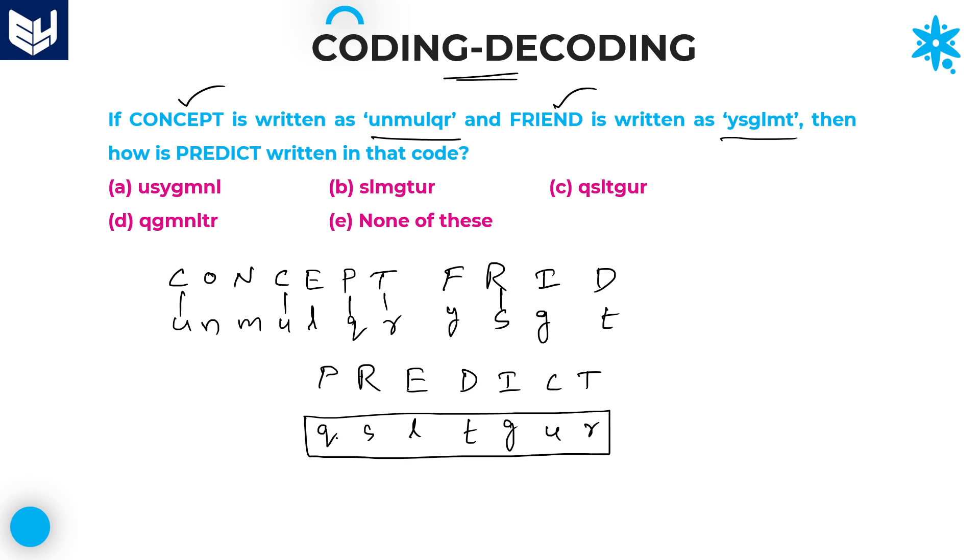So your required answer should be all small letters, and those letters are Q-S-L-T-G-U-R. It starts with Q, S. So this is not your answer. Option A is wrong, Option B is wrong. Once check it out Option C: Q-S-L-T-G-U-R. Option C is the right answer for this question.